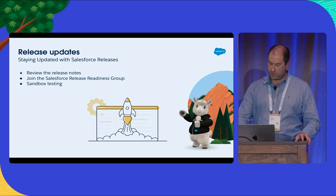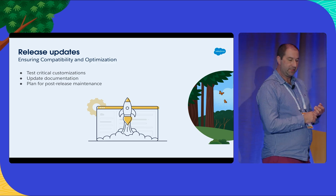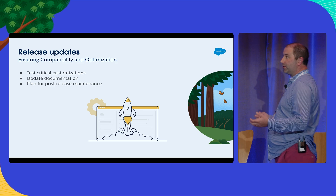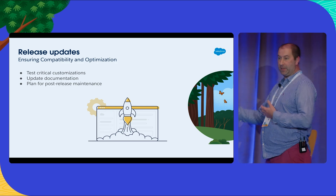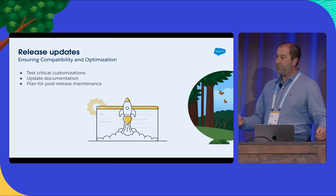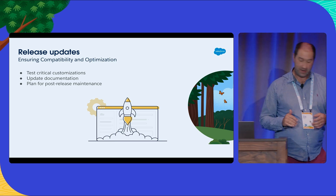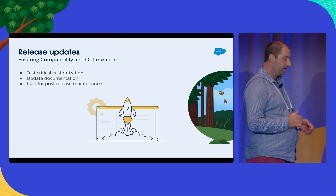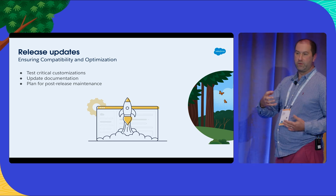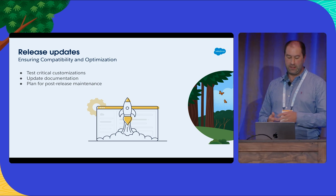So for releases: test critical customizations, update any documentation relevant to the business processes that might change as a result of the new functionality, and plan for post-release maintenance. With the best will in the world, things may not always go to plan. Be ahead of that — if things don't work out as you expect, know what you're going to do in terms of rolling back certain features that you might be trying to adopt as part of the release.